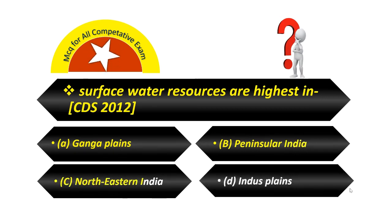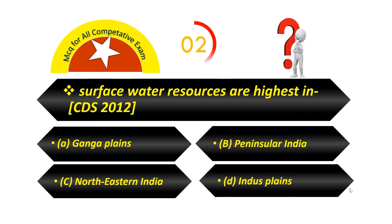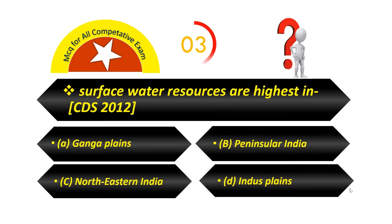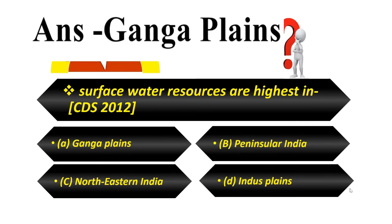Options: Option B — Peninsular India. Option C — Northeastern India. Option D — Indus Plains. Your answer is Ganga Plains.